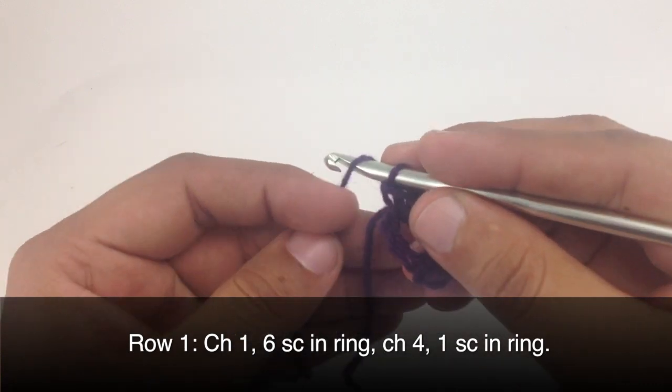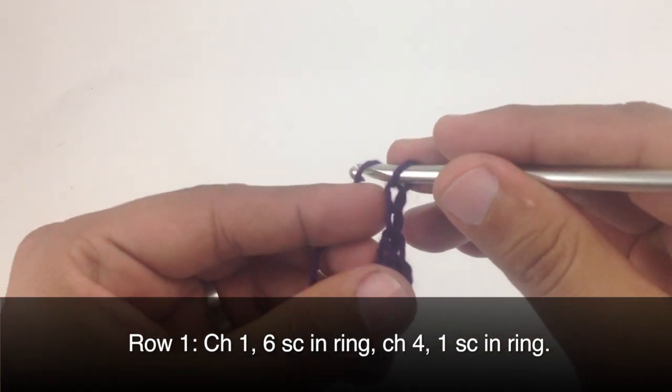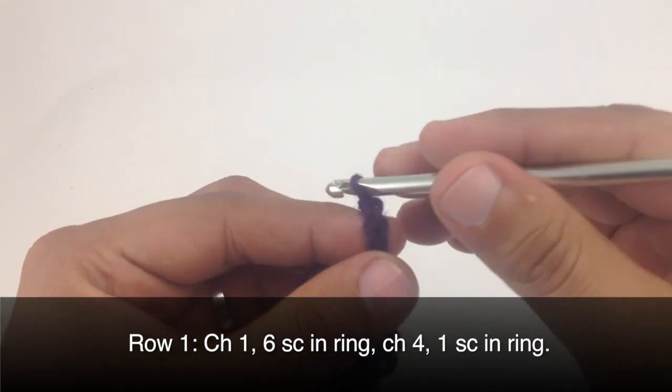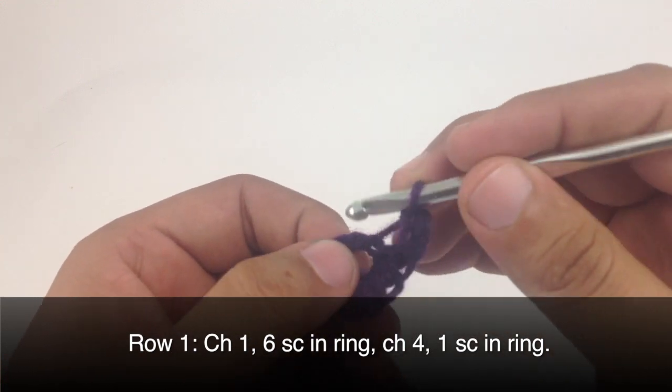So next we're going to chain 4. And then we will do a single crochet into the loop.